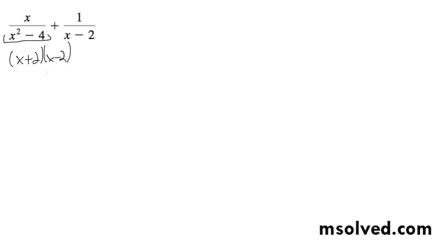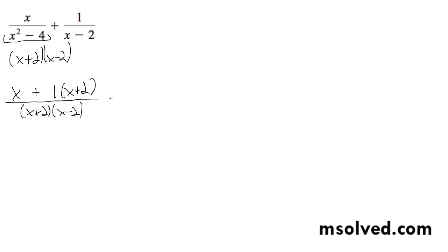So we're going to get (x+1)(x+2) over (x+2)(x-2), and we get x plus (x+2), all over (x+2)(x-2).